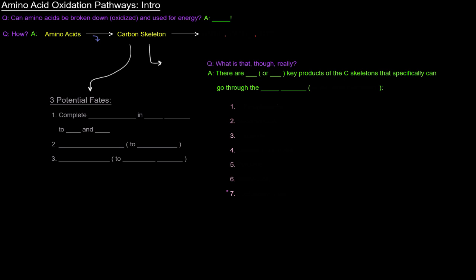We'll start this video series off with the question: can amino acids be broken down or oxidized and used for energy? The answer, of course, is yes. This is something we've mentioned before. How, though? How is it that amino acids are oxidized and broken down for energy? Well, the first thing we have to do is take the amino acids and remove their alpha amino group, and that comes off as an ammonium ion. What we're left with is the carbon skeleton, and that carbon skeleton has three potential fates.